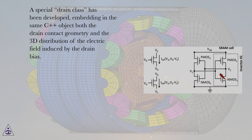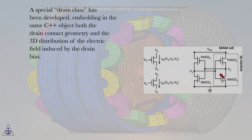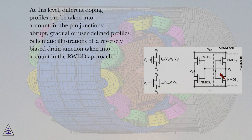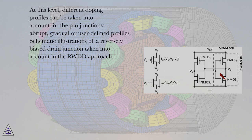A special drain class has been developed, embedding in the same C++ object both the drain contact geometry and the 3D distribution of the electric field induced by the drain bias. At this level, different doping profiles can be taken into account for the PN junctions: abrupt, gradual or user-defined profiles.